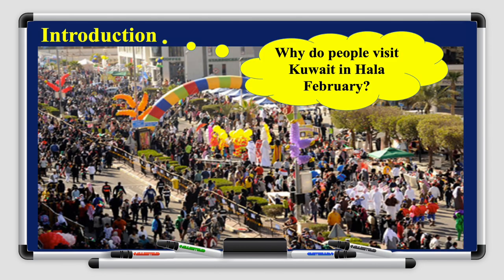Today's lesson is about an advertisement for Kuwait. We have a question here: why do people visit Kuwait in Hala February? The answer is in this picture. People here are celebrating the independence of Kuwait — it happens in February. So we have many activities, people are happy and gathering around. Now we will learn how people celebrate in February — you will see in the coming slides.